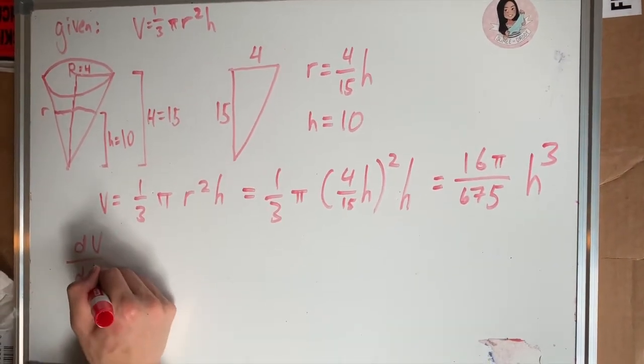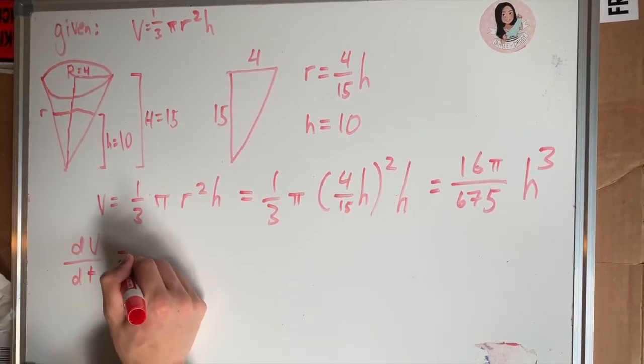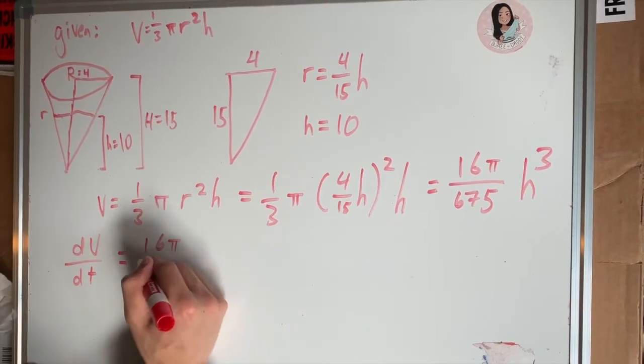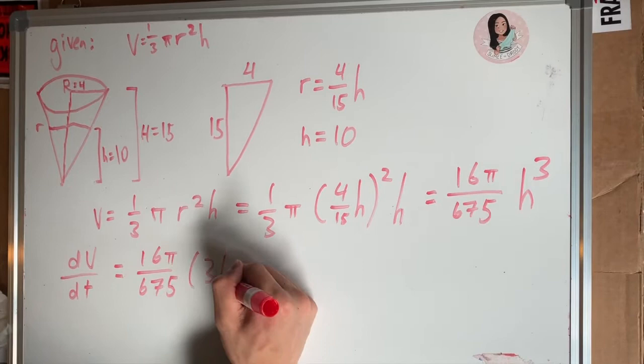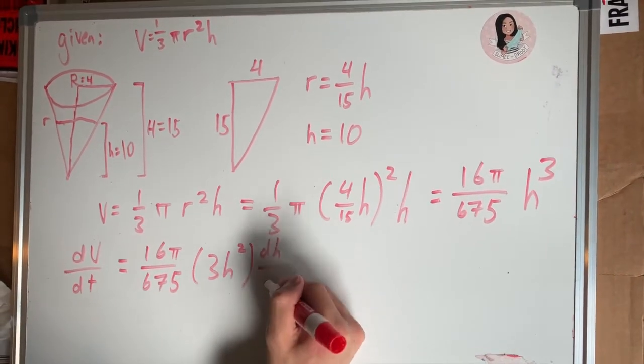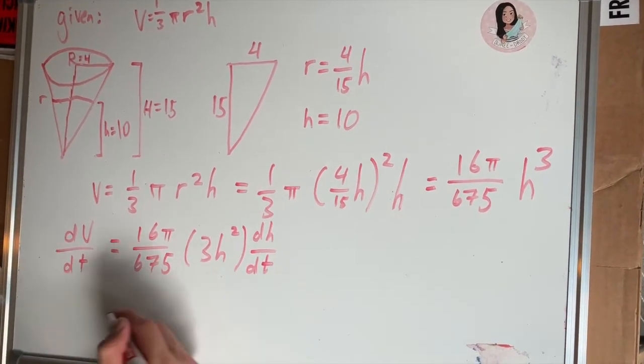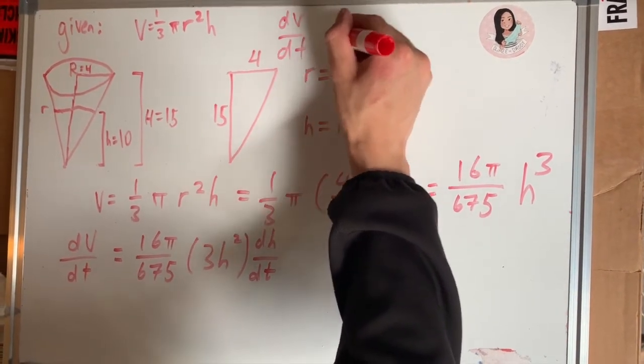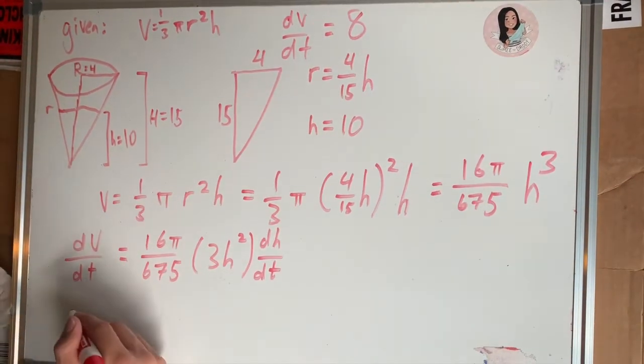Taking the derivative of the volume, we get dV/dt equals (16π/675) times 3h squared times dh/dt. We're trying to solve for dh/dt, so we need to plug in the change in volume, which is given as 8 centimeters cubed per minute.